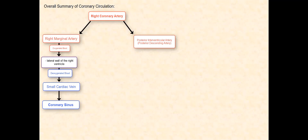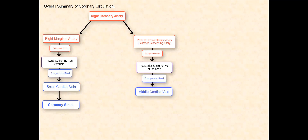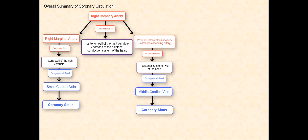The posterior interventricular artery, or posterior descending artery, supplies oxygenated blood to the posterior and inferior wall of the heart. The deoxygenated blood is then received by the middle cardiac vein, which converges with the coronary sinus. There is also a region of the right coronary artery that supplies oxygenated blood to the anterior wall of the right ventricle and portions of the electrical conduction system of the heart. The deoxygenated blood from this region is received by the anterior cardiac veins.